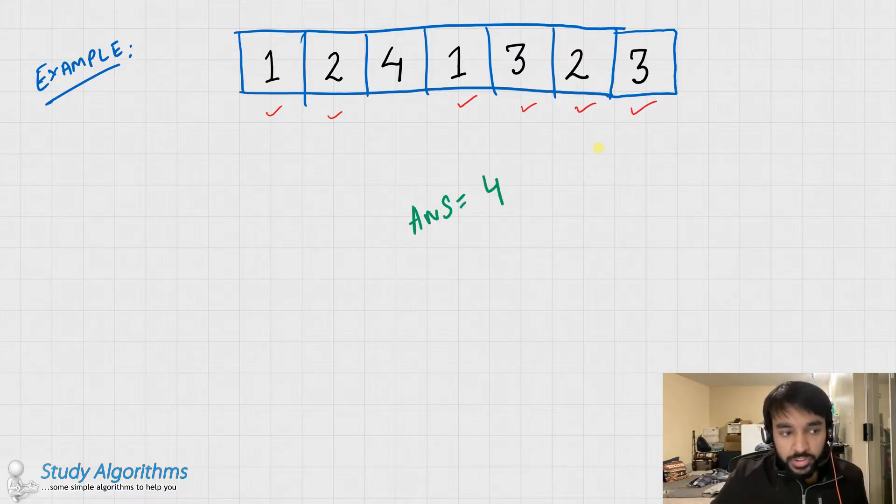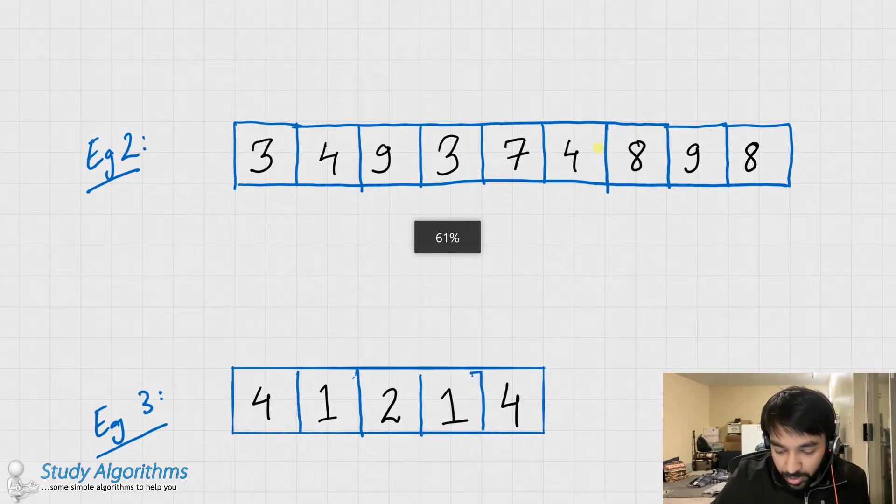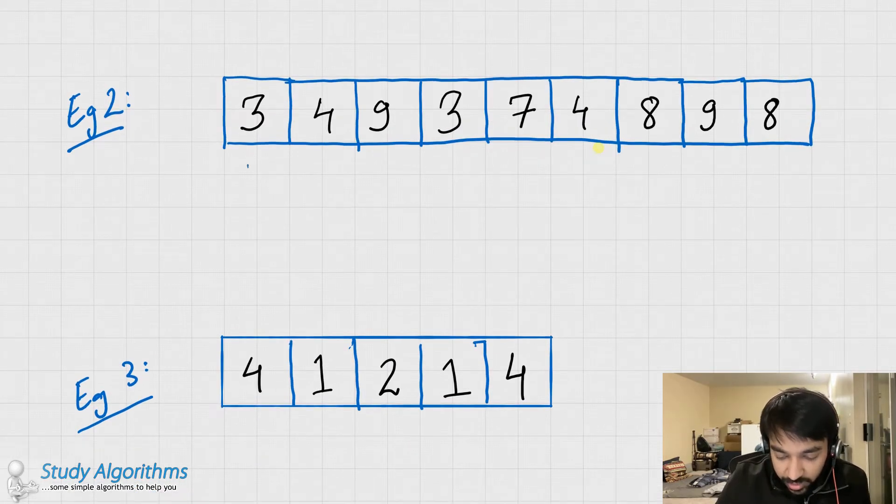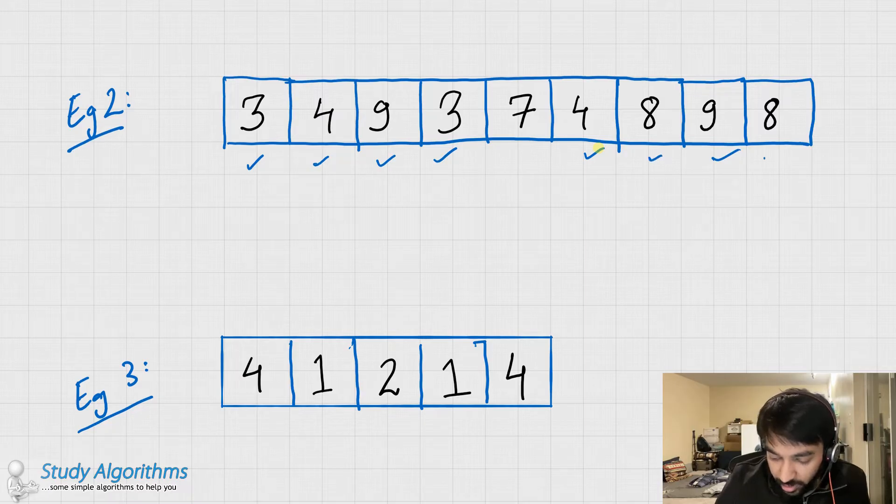Let us have a look at two more sample test cases. So if you see example number 2, we have 3 that is occurring twice, 4 is occurring twice, 9 is occurring twice, and then 8 is occurring twice. So the answer for this case would be 7.